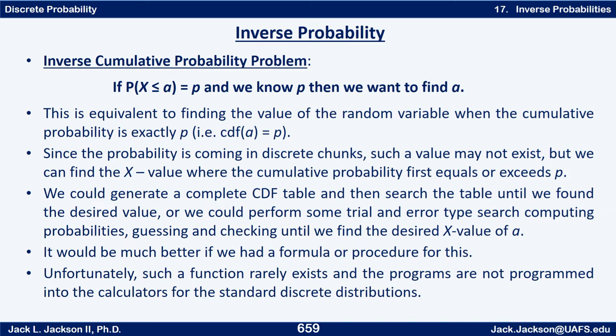Since probability comes in discrete chunks with a discrete probability function, such a value may not exist — there may not be a value A for which the cumulative probability is exactly P. But what we can usually do is find the value of A where the cumulative probability first equals or exceeds P. Or maybe we want the first one right before it exceeds P — either way we can look at that situation.